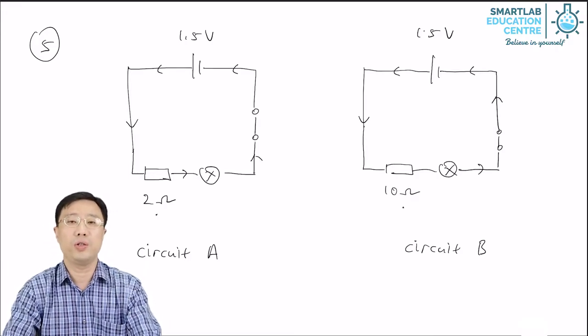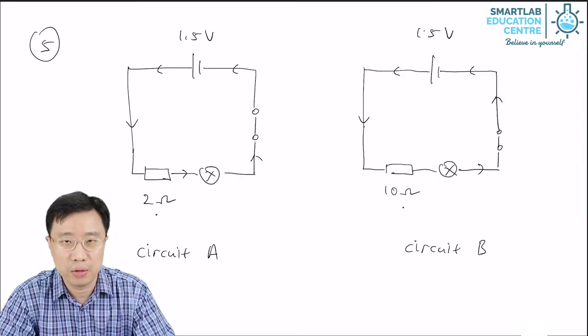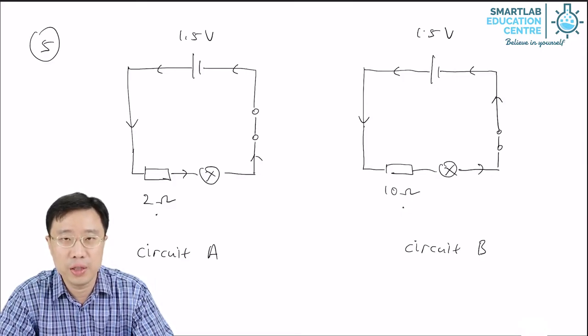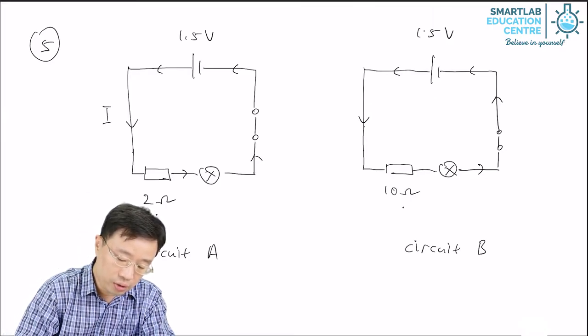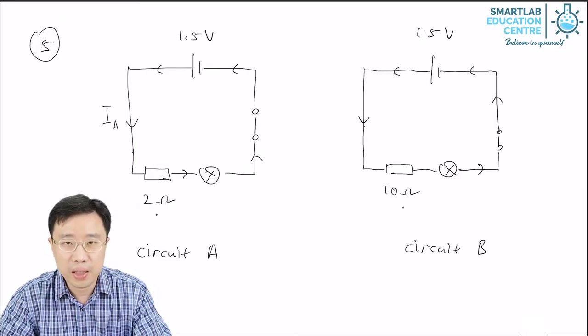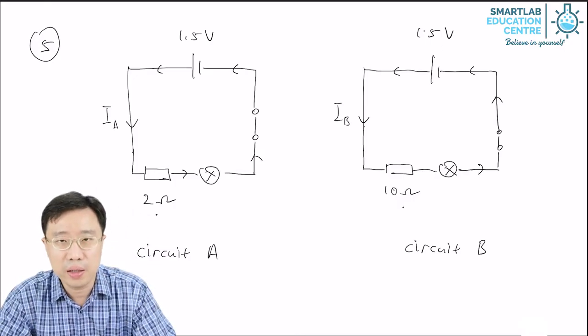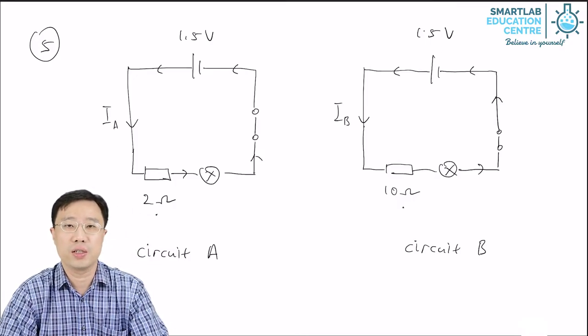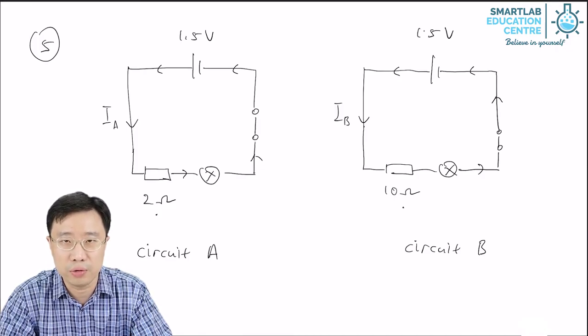So, based on your understanding of resistance, you should be able to tell that the current flowing in circuit A will be bigger than the current in circuit B. Why? Because circuit A has low resistance, which means it is easier for current to flow.